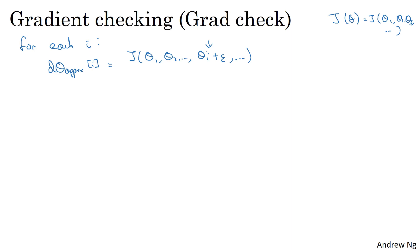So increase theta i by epsilon and keep everything else the same. And because it's taking a two-sided difference, we're going to do the same on the other side with theta i minus epsilon. And then all of the other elements of theta are left alone. And then we'll take this and we divide it by 2 epsilon.